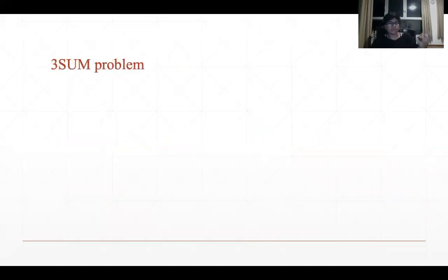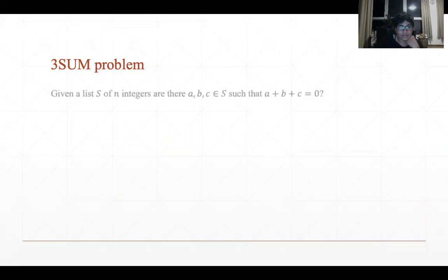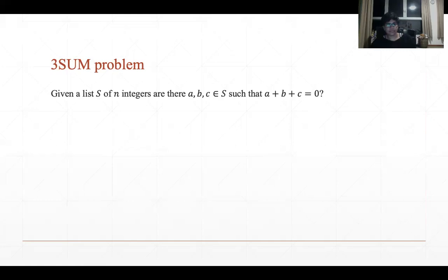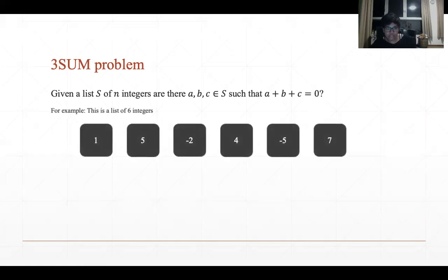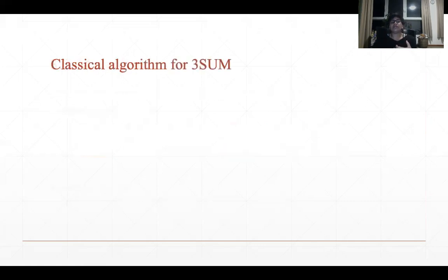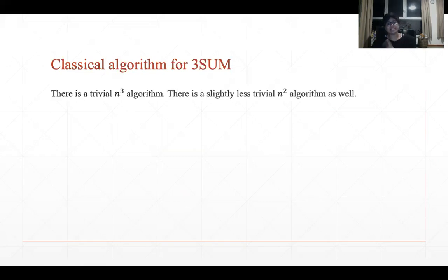Let me give you a flavor of what the 3SUM problem looks like, since it becomes our central problem in proving lower bounds. It's a very easy problem to describe: we have a list S of n integers, and we want to know whether there exists a triple A, B, C belonging to this list such that they all sum to zero. For example, given a list of six integers, if we set A = 1, B = 4, and C = -5, we have a triple which adds up to zero.